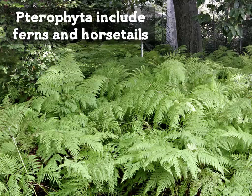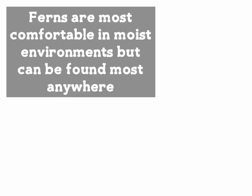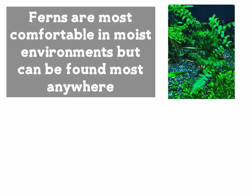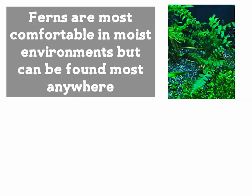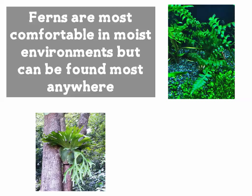The second division is Pterophyta, which includes horsetails as well as ferns. Ferns are most comfortable in moist environments but can really be found anywhere. Examples shown here include an aquatic fern that is mutualistic with cyanobacteria, and a staghorn fern, which is an example of an epiphyte because it is latched on to a tree.